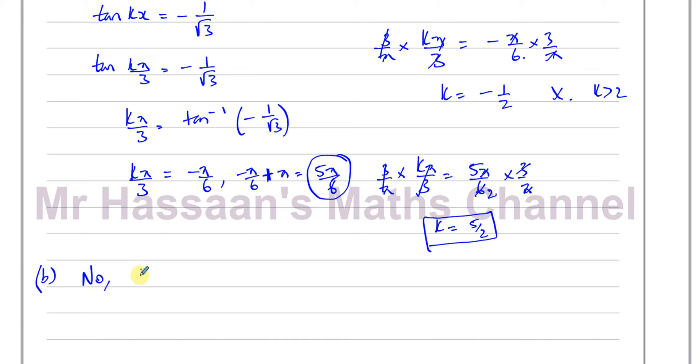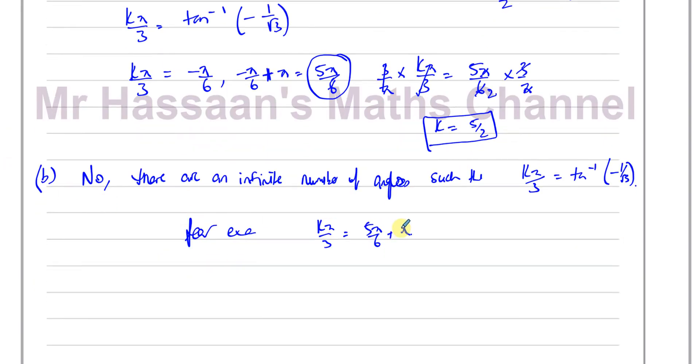So we can say no, there are an infinite number of angles such that k π/3 is equal to the inverse tan of minus 1 over root 3. For example, when k π/3 is equal to 5π/6 plus another π, that will also give us a value of k which will solve the answer.